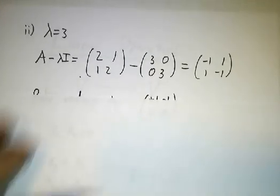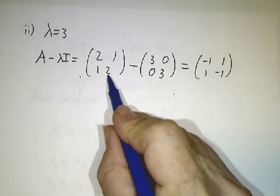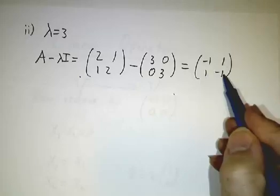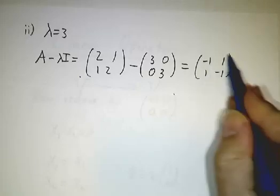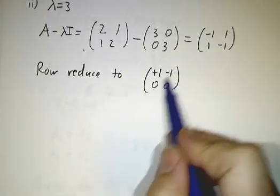When lambda is 3, A minus 3 times the identity is A minus 3 times the identity. That gives us negative 1, 1, 1. So this is the matrix that we have to row-reduce, and it row reduces to.